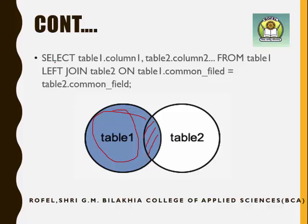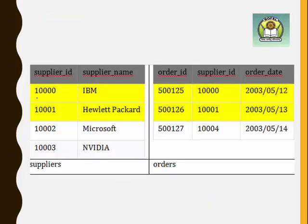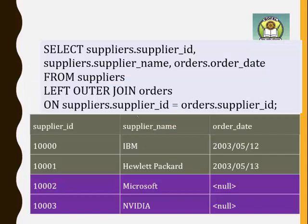The syntax is: SELECT table1.column1, table2.column2 FROM table1 LEFT JOIN table2 ON common_field. The ON clause specifies the joining condition, and the condition always contains the common field between the two tables. Looking at our example, the common values are the matching supplier_id rows, and the exclusive values are those unique to the suppliers table and those unique to the orders table.